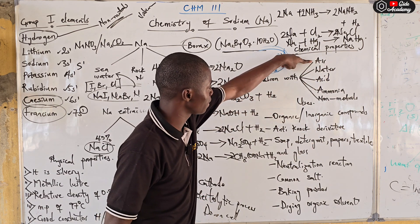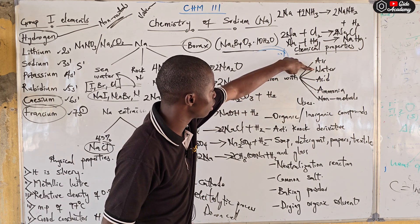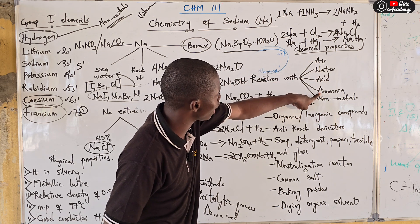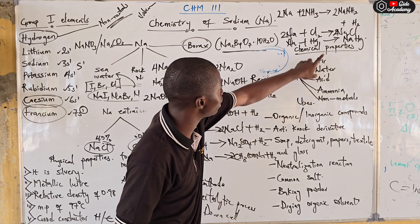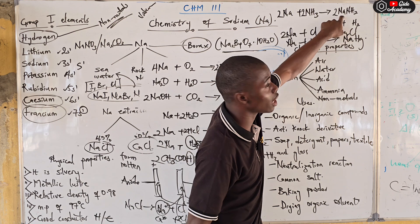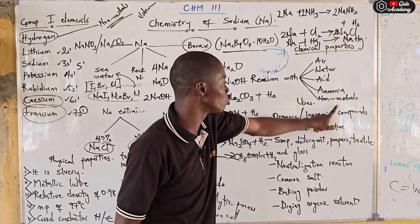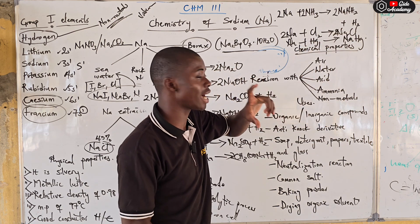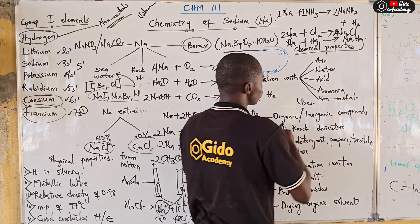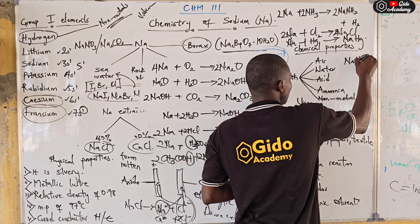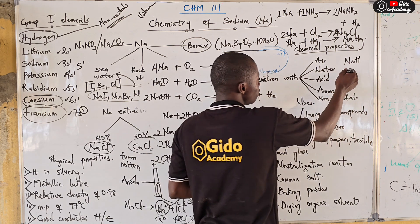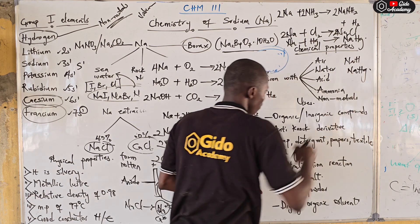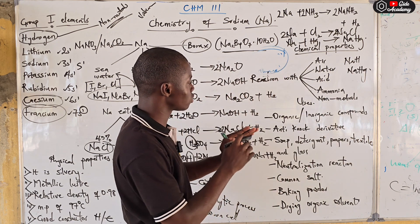To summarize sodium's chemical properties: sodium reacts with water, air, acids, and ammonia (forming sodamide), and with non-metals. Additionally, sodium reacts with hydrogen to form sodium hydride. When sodium reacts with mercury it forms sodium amalgam.